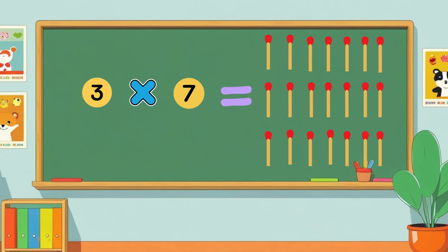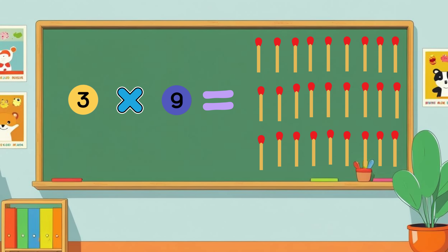Three times seven is twenty-one. Three times eight is twenty-four. Three times nine is twenty-seven. Three times ten is thirty.